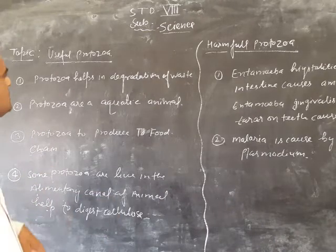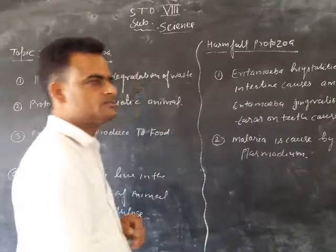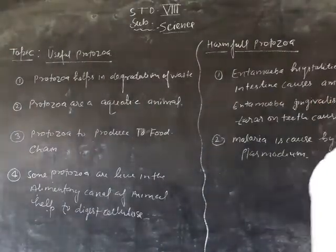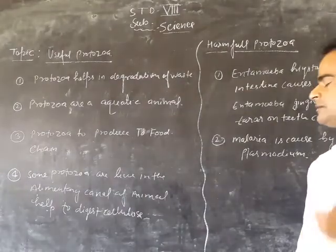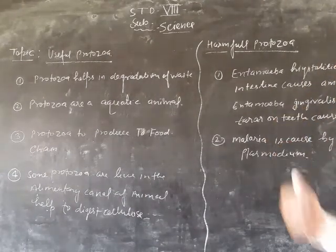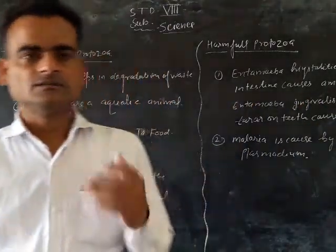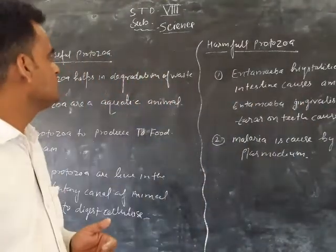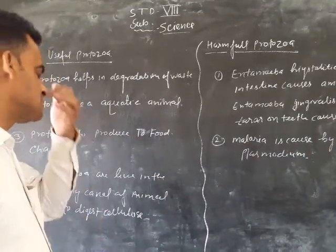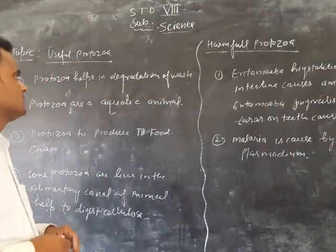So, discussion for the different types of the protozoa. Protozoa are unicellular organisms — that is the saprophytic, that is the parasitic — and there are different types of protozoans found in various environments.